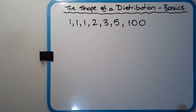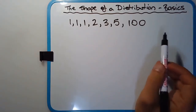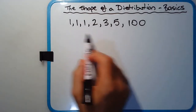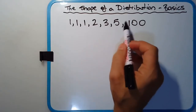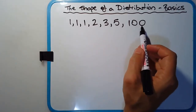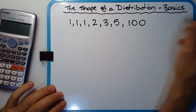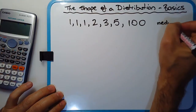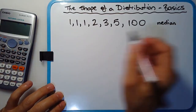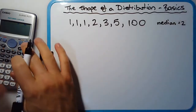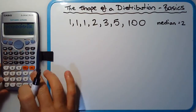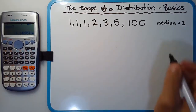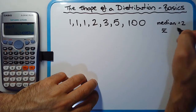Looking at that immediately, you can see there's clearly one number that's out of place, which is the 100. There seems to be a cluster of scores between 1 to 5, and then a big gap, and then this very large outlier: 100. The median of this data set is clearly 2, since the scores are listed in order. The mean — 1+1+1+2+3+5+100 divided by 7 — gives us 16.14.